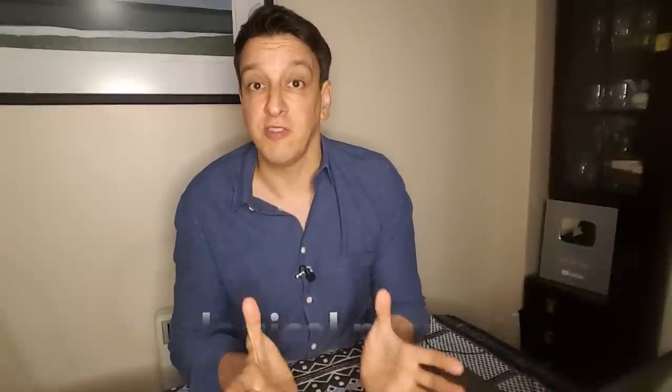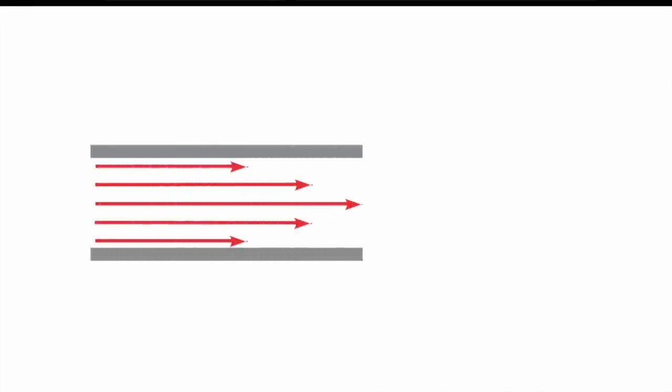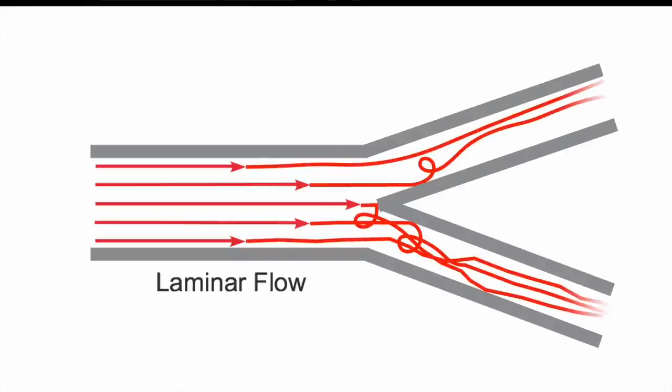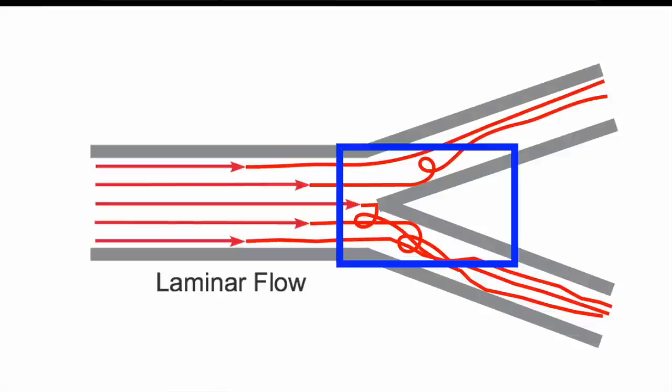Another factor is the properties of the blood flow itself — in nerd speak, we call these rheological properties. Rheology is the science that studies the physics of fluid flow. In a straight tube, a liquid can flow very smoothly and regularly — this is called laminar flow, and that's what happens with blood in straight arterial segments. But when the vessel splits at a bifurcation, this smooth flow is disturbed. There's turbulence, with fluid hitting the wall in some areas, and this creates specific areas of susceptibility where we tend to see plaque growing.